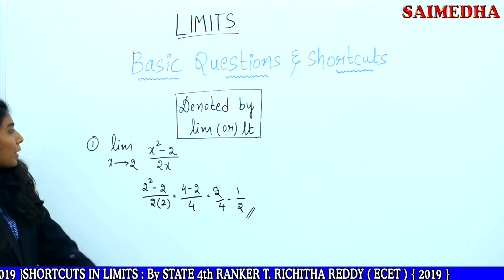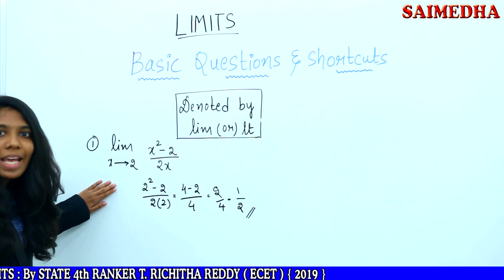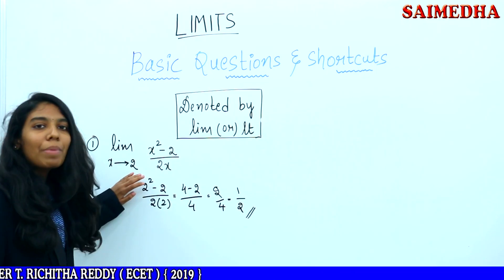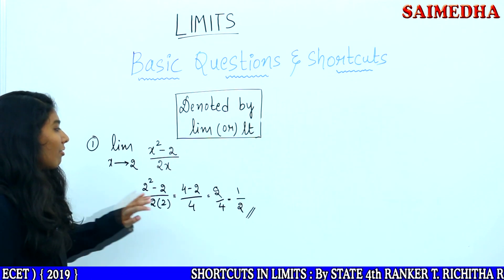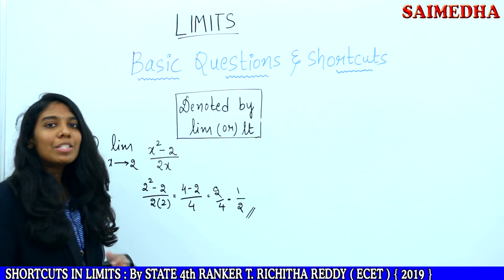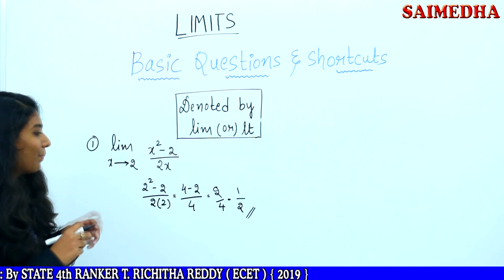1 by 2 is the solution of limit x tends to 2 of x squared minus 2 by 2x. 1 by 2 is determined. Let us move to another problem.